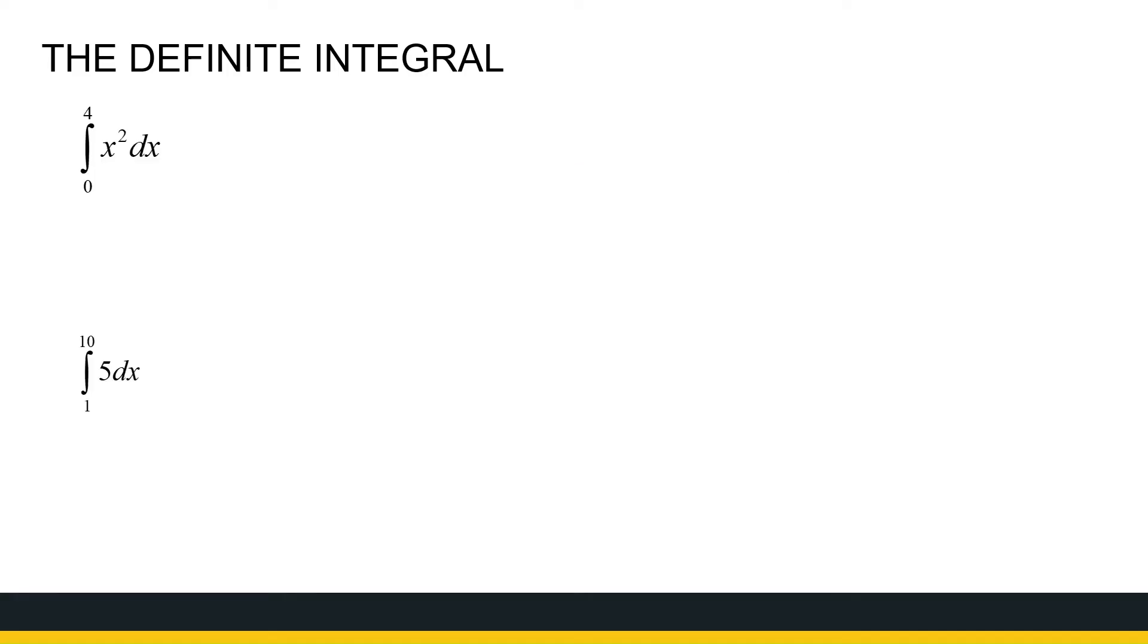All right, so let's look at the first very simple one, the integral from 0 to 4 of x squared. So we know the antiderivative of x squared is a third x cubed plus c. Now we're going to talk about the plus c shortly. So we're going to say, I'm going to do this on the side because you're going to see we can simplify this.